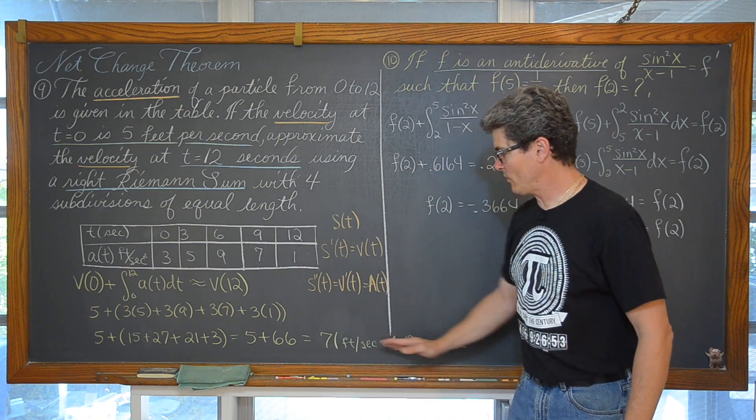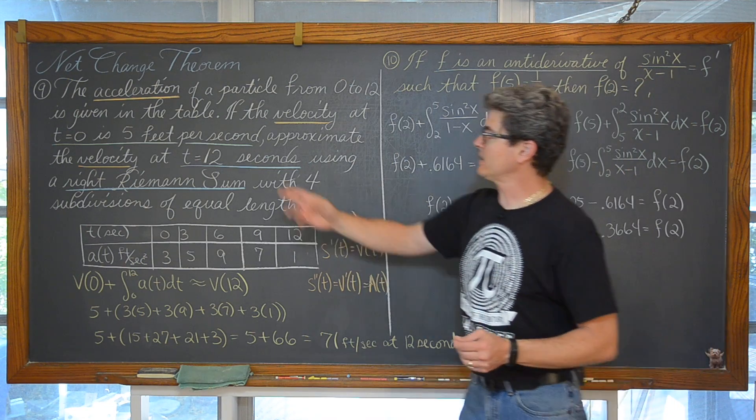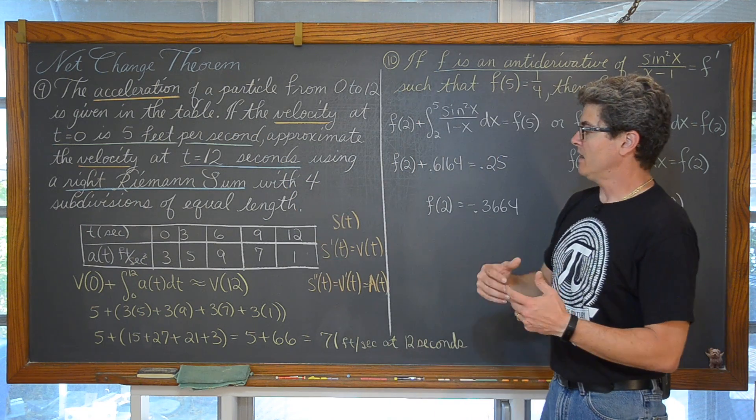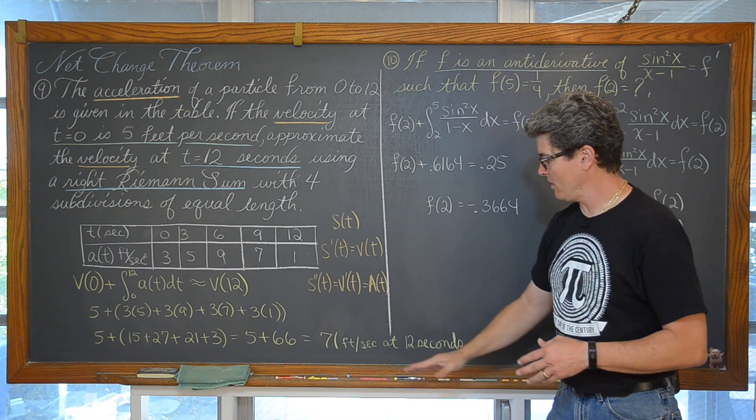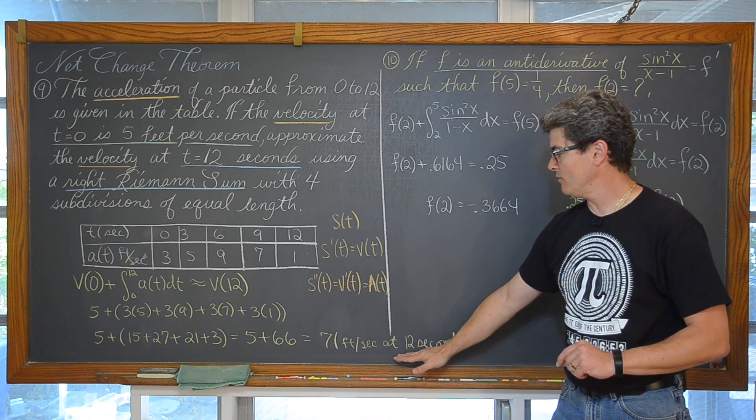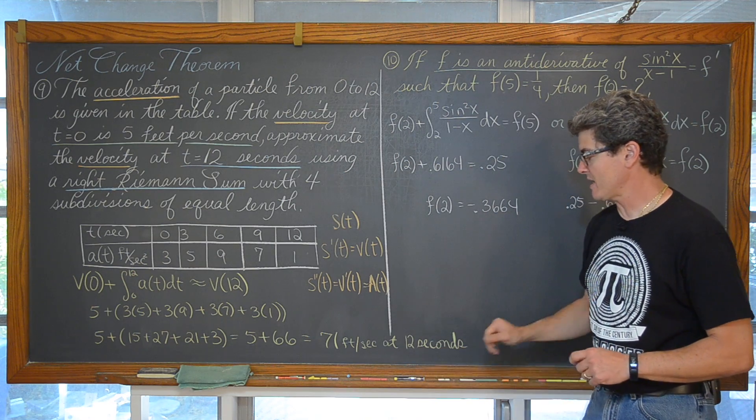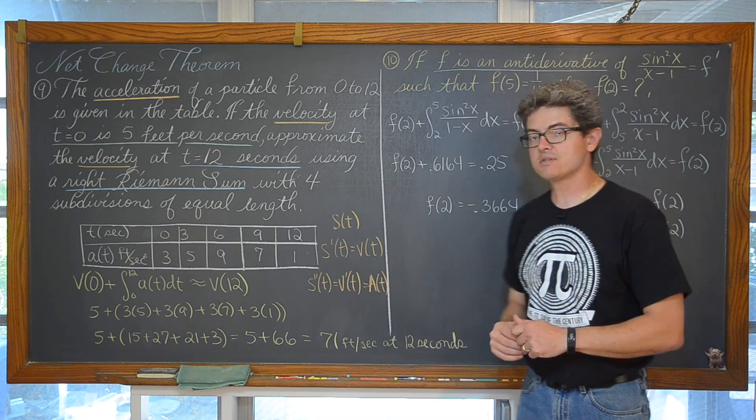And working all that out we get that if at time 0 we were traveling at 5 feet per second going through this acceleration between time 0 and time 12. Well then at time 12 we are traveling at approximately 71 feet per second at 12 seconds.